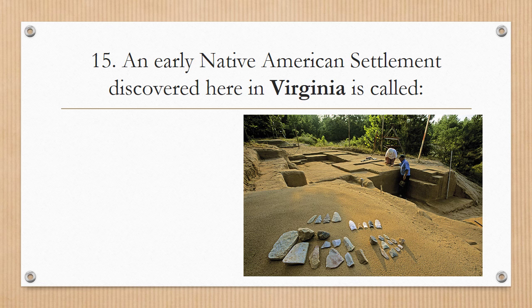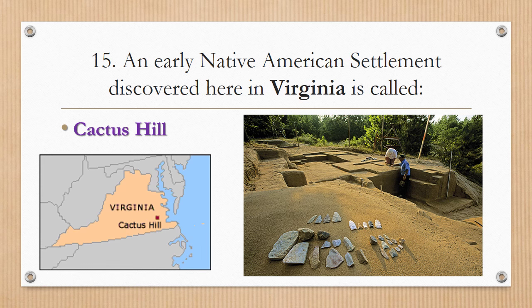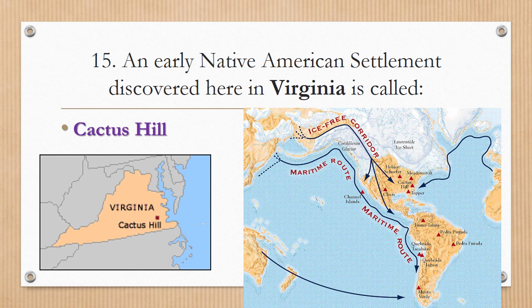Number fifteen: an early Native American settlement discovered here in Virginia was called Cactus Hill. Cactus Hill is located in Virginia. You can see several ancient settlements all over North and South America, perhaps having come through the theories we talked about — the land bridge theory or the maritime route.